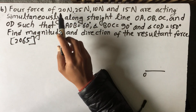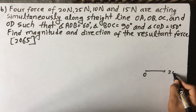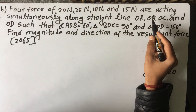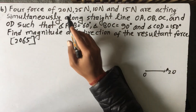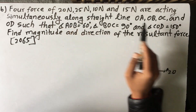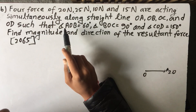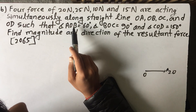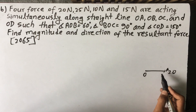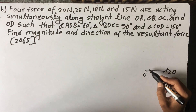OA, B is Newton. And such that angle OAB is equal to 60 degrees. So OA and OB are at 60 degrees.